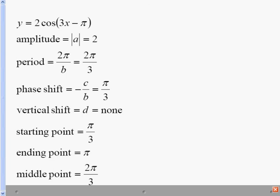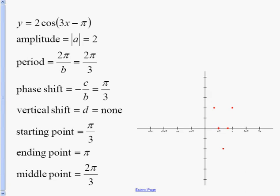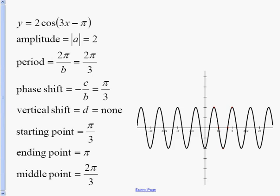Graphing this one is very similar. For a cosine curve, we start at the max, so our starting point is at the maximum. Then we go to the minimum at the middle point, and the ending point goes back to the max. Halfway between those key points we cross the zero axis. Since our period is so small — less than pi — we can see many periods of the cosine curve shown when we connect the curves.